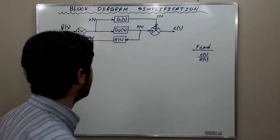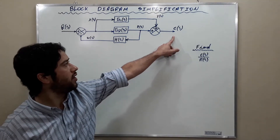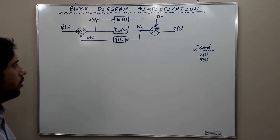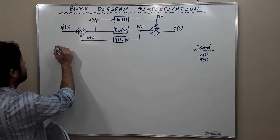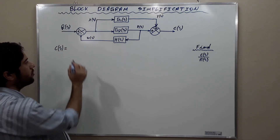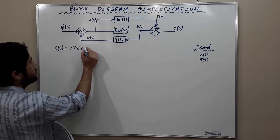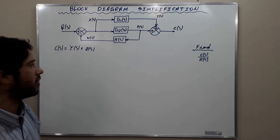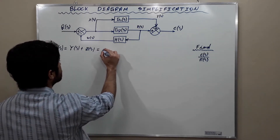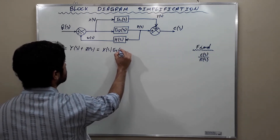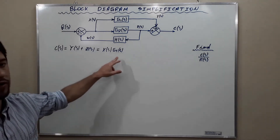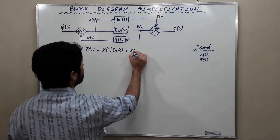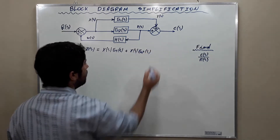Let's begin solving the first exercise. Observe that C of S is equal to Y of S plus Z of S. We're going to say that C of S is equal to Y of S plus Z of S. And observe also that Y of S is G1 of S times X of S. Y of S is X of S times G1 of S. And Z of S is X of S times G2 of S.